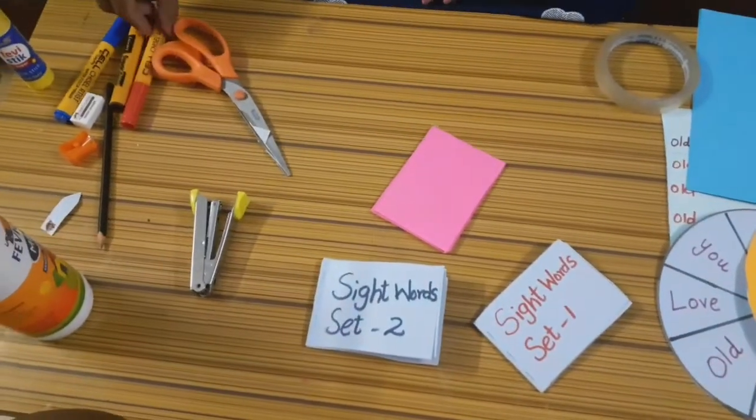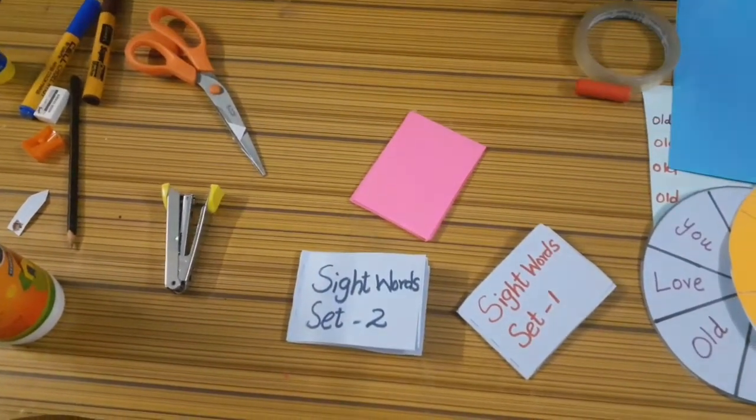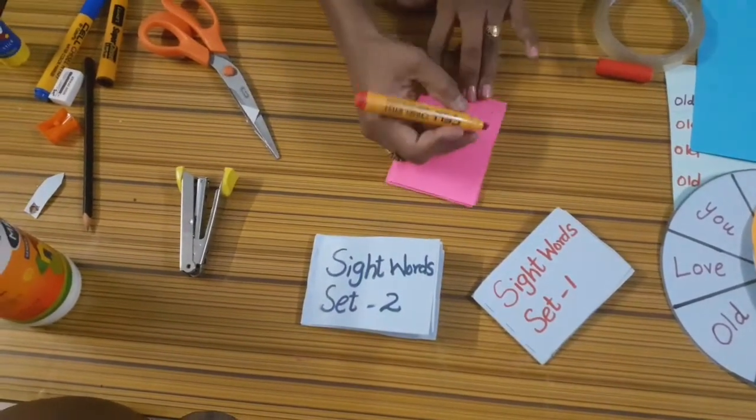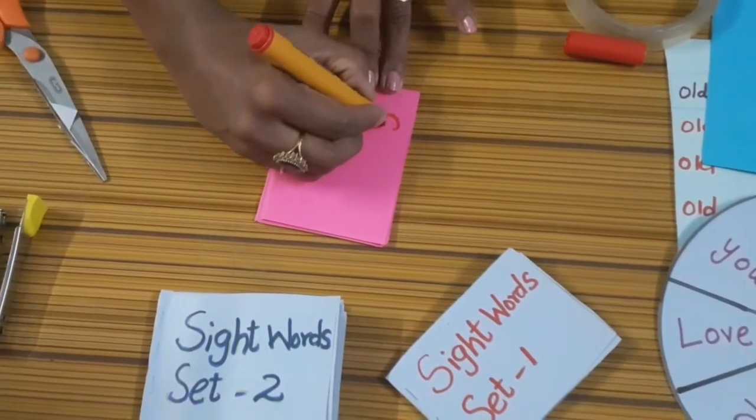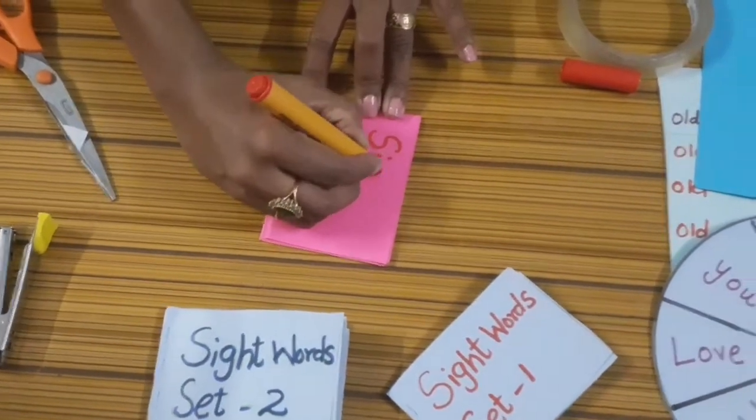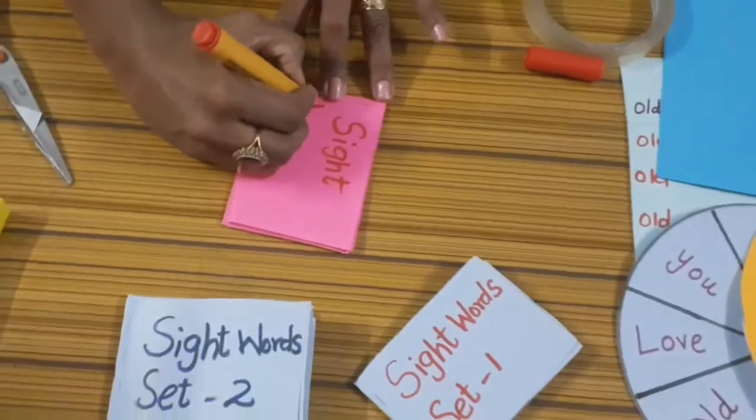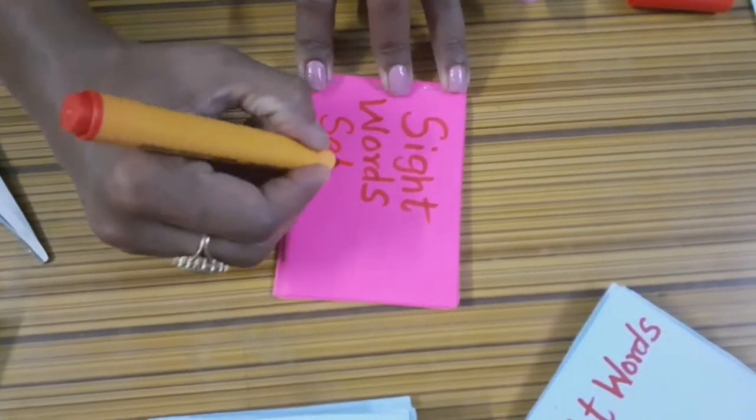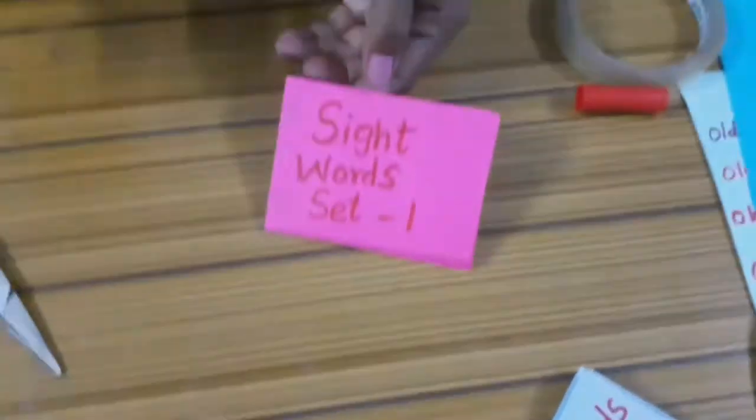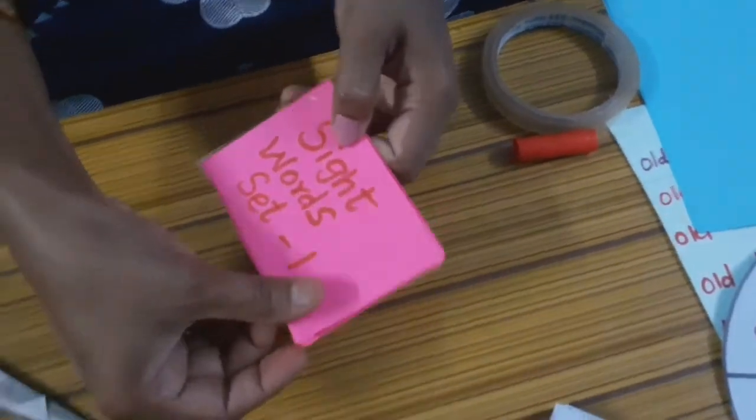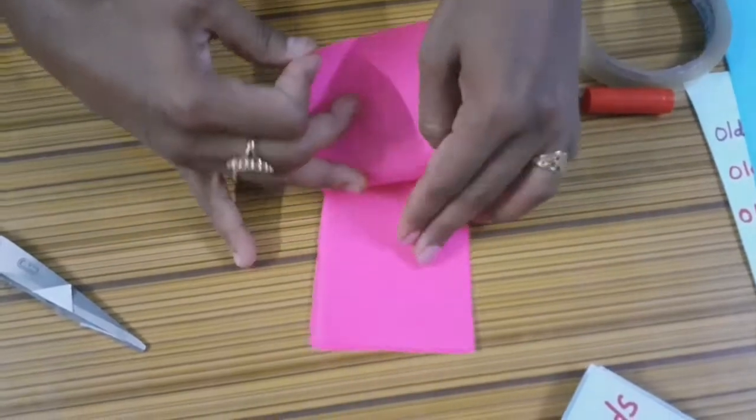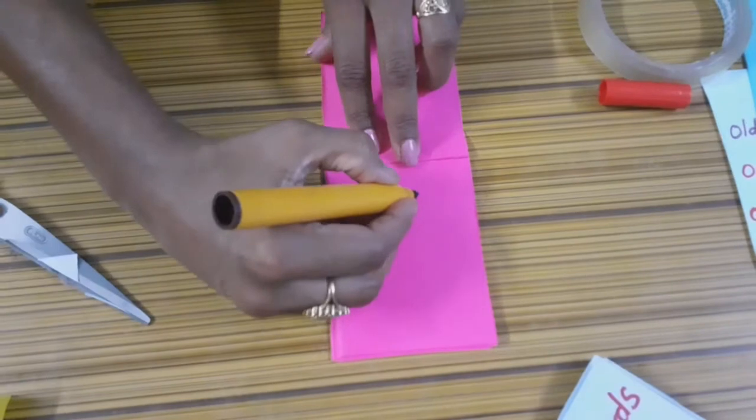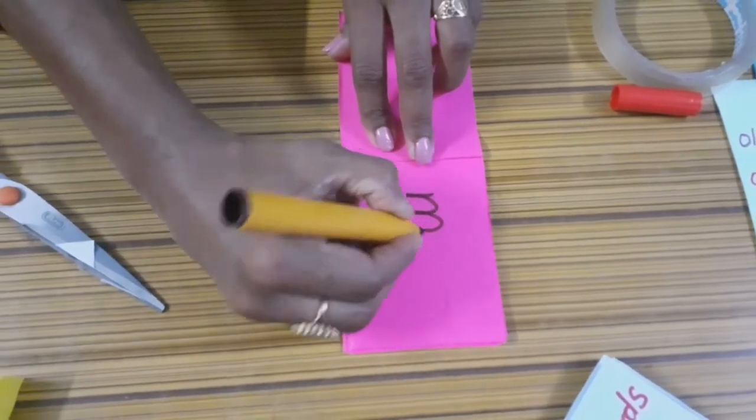Next you are going to write the sight words in this small book. See, our book is ready, it's very easy to do. Let's write sight words. Set one, come on children, let's write our sight words.